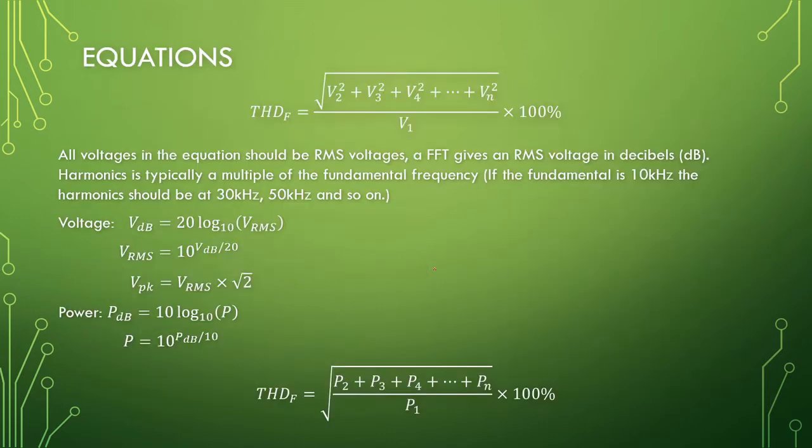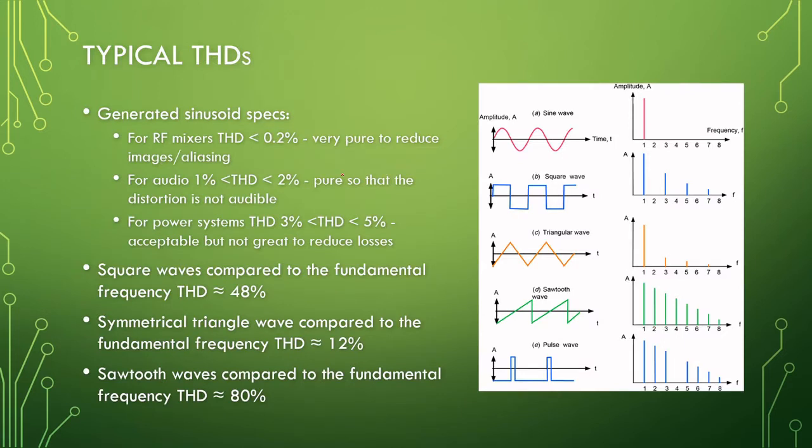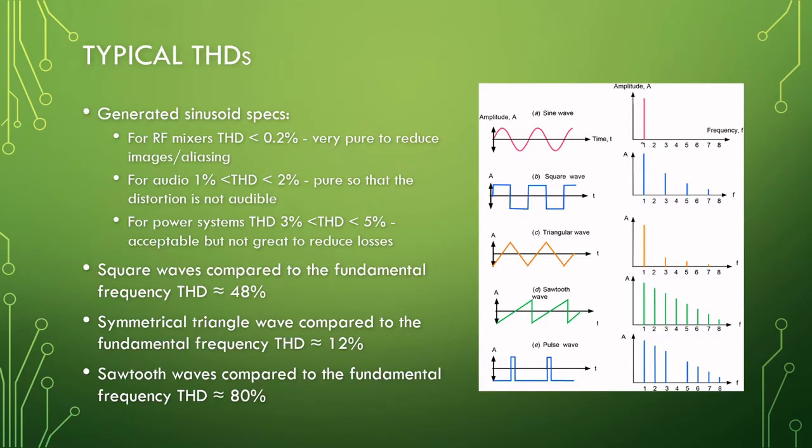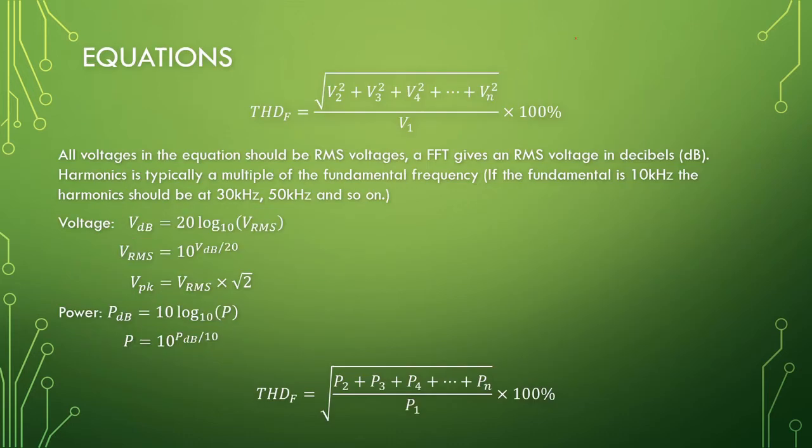How it works to calculate the total harmonic distortion as a percentage is the RMS voltage of every one of these peaks. You take the RMS voltage and you square them, add them together, take the root, all divided by the RMS of the fundamental frequency. Multiply that by 100 and that will give you the THD of a signal.